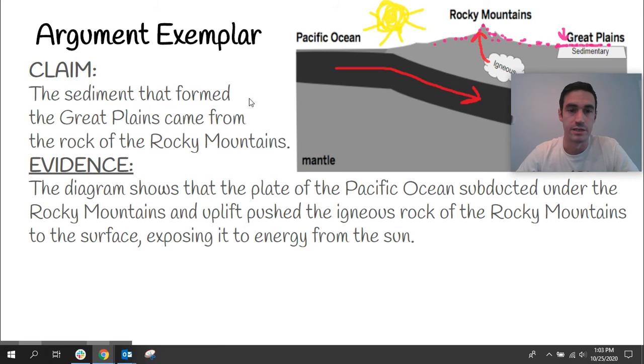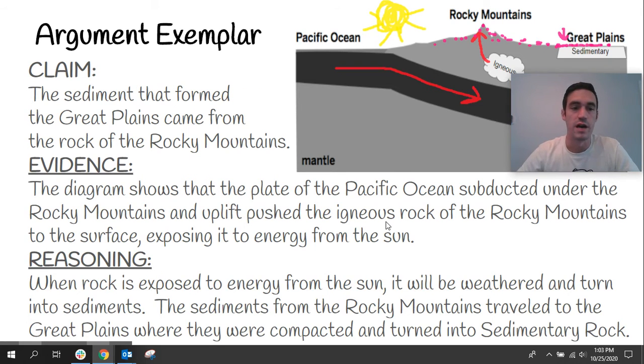Finally, my reasoning would be that when rock is exposed to energy from the sun, it will be weathered and turned into sediments. The sediments from the Rocky Mountains travel to the Great Plains where they were compacted and turned into sedimentary rock. In this example, in my reasoning, now I start to explain what I actually learned in class and how it connects to this diagram. This is where I have things that I might not be able to see in my diagram, like the weathering and erosion or the compaction. I'm actually explaining the concept that I know.